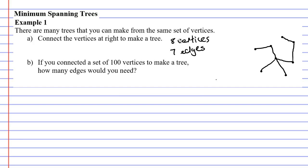We can see that every vertex is connected here. Now moving on to question B: If you connected a set of 100 vertices to make a tree, how many edges would you need? You would need 99 - one less than the amount of vertices that you have.